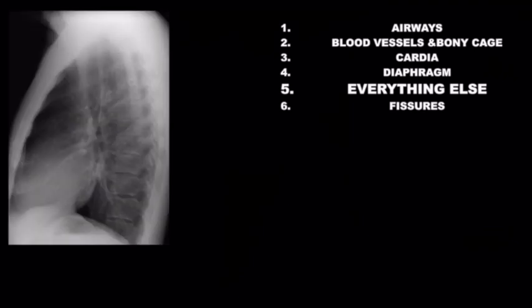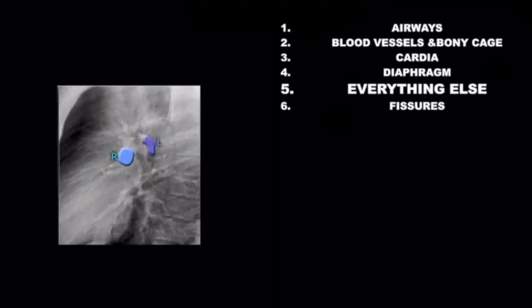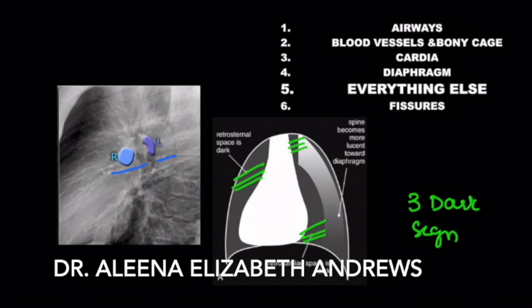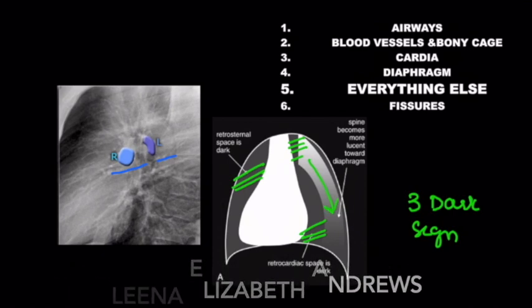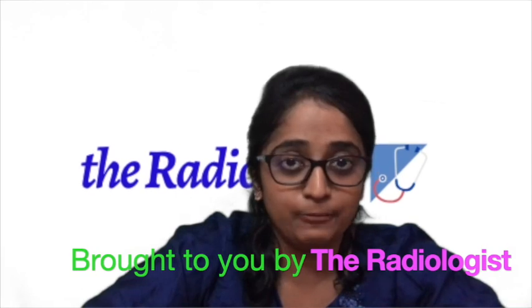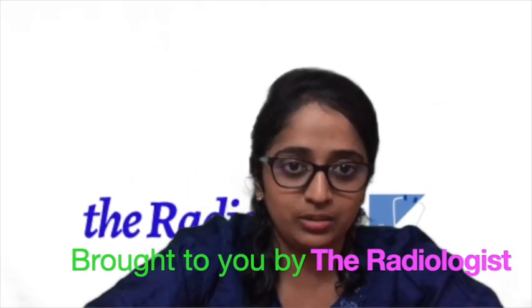Summarizing, we have seen the normal anatomical structures ranging from airways to blood vessels, the bony cage, cardiac, diaphragm, and fissures. Always remember the position of the hilar vessels sandwiching the air column — the right pulmonary artery being anterior and the left pulmonary artery being posterior. Never forget to look for the three dark areas and one sign: the retrosternal, retrocardiac, and retrotracheal or radar triangle, and the spine sign where, as you go down, the lung fields must be more radiolucent. I hope this lecture on lateral chest radiograph was helpful. I'll be coming up with the next video shortly. Thank you.